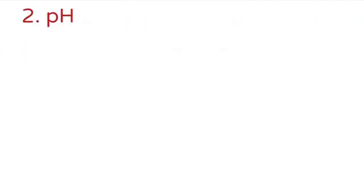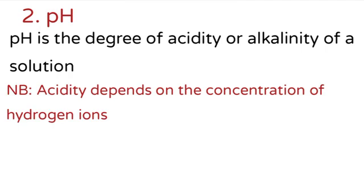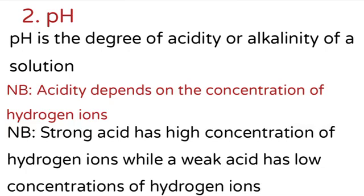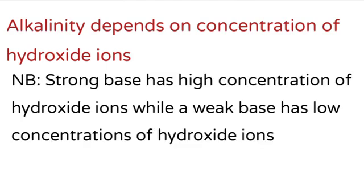Factor number two is pH. pH is the degree of acidity or alkalinity of a solution. Acidity depends on the concentration of hydrogen ions in a solution. Note: a strong acid has high concentration of hydrogen ions, while a weak acid has low concentration of hydrogen ions. Alkalinity or basicity depends on the concentration of hydroxide ions. A strong base has high concentration of hydroxide ions, while a weak base has low concentration of hydroxide ions.